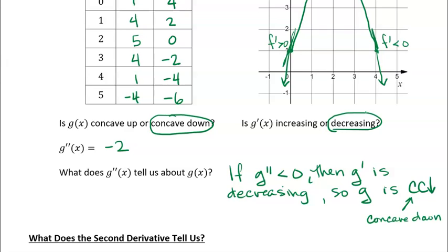So the main takeaway: if the second derivative is positive, the function is concave up at that point; if the second derivative is negative, it's concave down. You can have functions that have both concavities — a function could be concave down and then switch to concave up. In that case, the second derivative depends on x rather than being constant. The key takeaway is that the second derivative tells us about the concavity of the function.